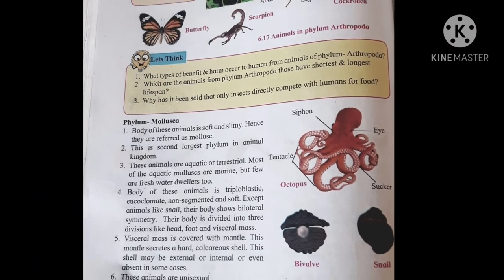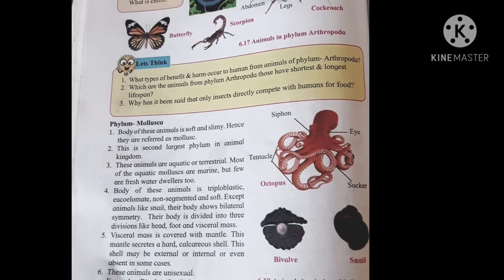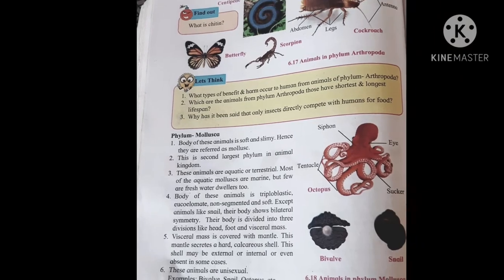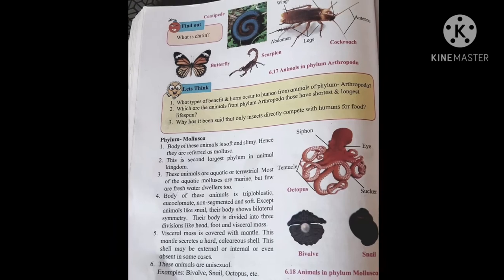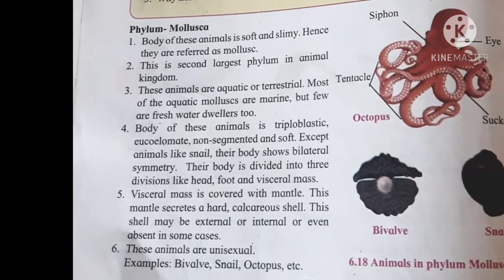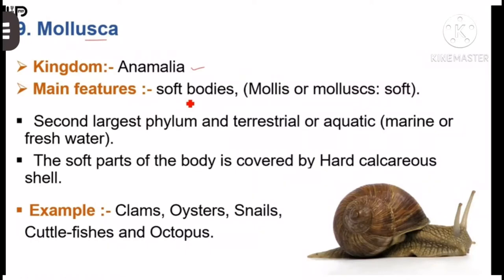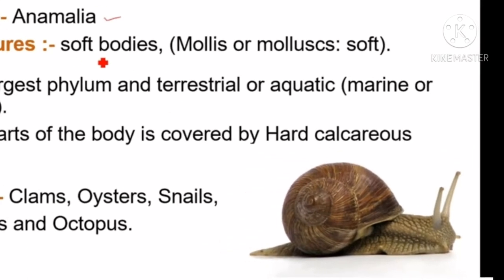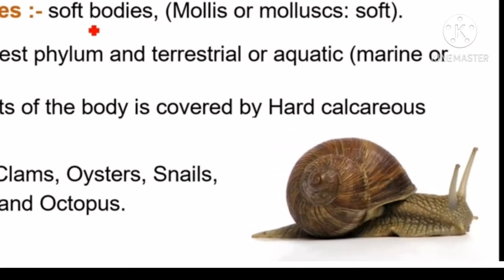The next phylum is Phylum Mollusca. Characteristics: First, the body of these animals is soft and slimy; hence they are called mollusks. Second, this is the second largest phylum in the animal kingdom. Aquatic or terrestrial. Triploblastic. Visceral mass is covered with a mantle. These animals are unisexual. For example: snail, octopus, bivalve, etc.